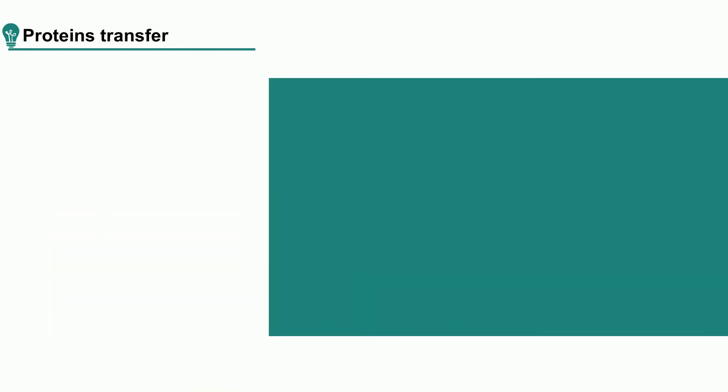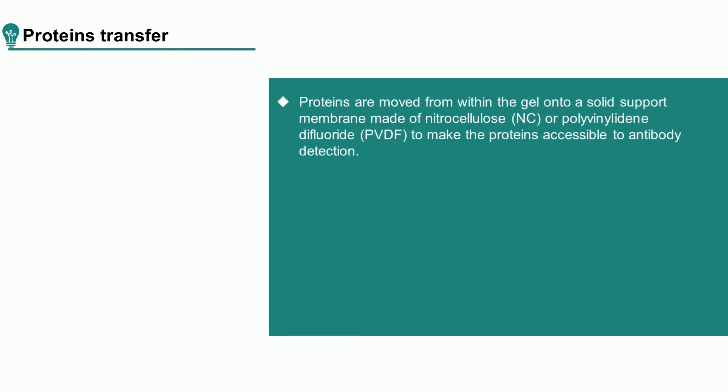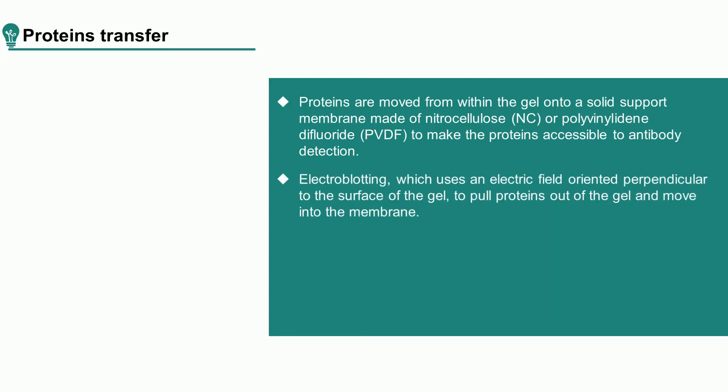After separating proteins by gel electrophoresis, proteins are moved from within the gel onto a solid support membrane to make the proteins accessible to antibody detection. The main method for transferring proteins is called electroblotting, which uses an electric field oriented perpendicular to the surface of the gel to pull proteins out of the gel and move them into the membrane. It can be done under semi-dry or wet conditions, while wet conditions are usually more reliable as the gel is less likely to dry out.